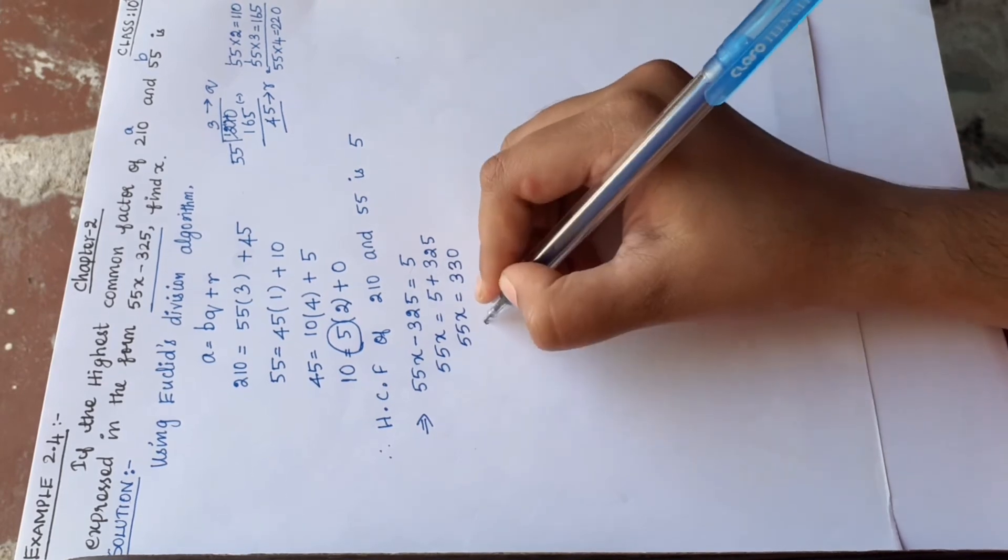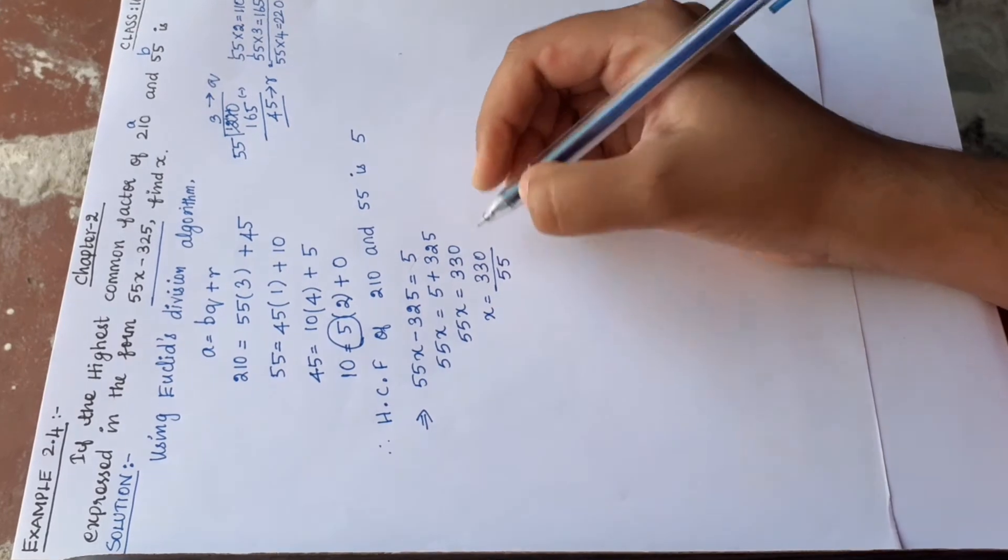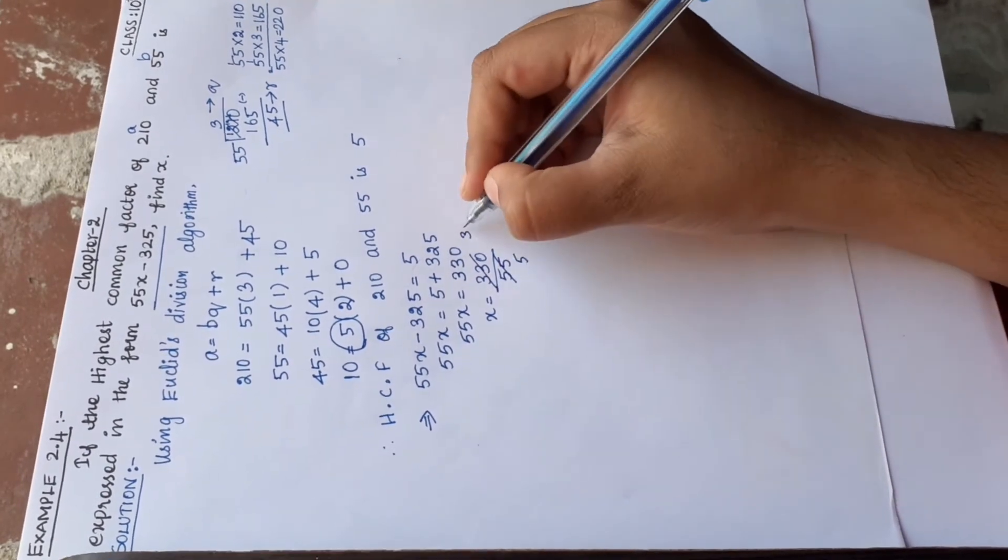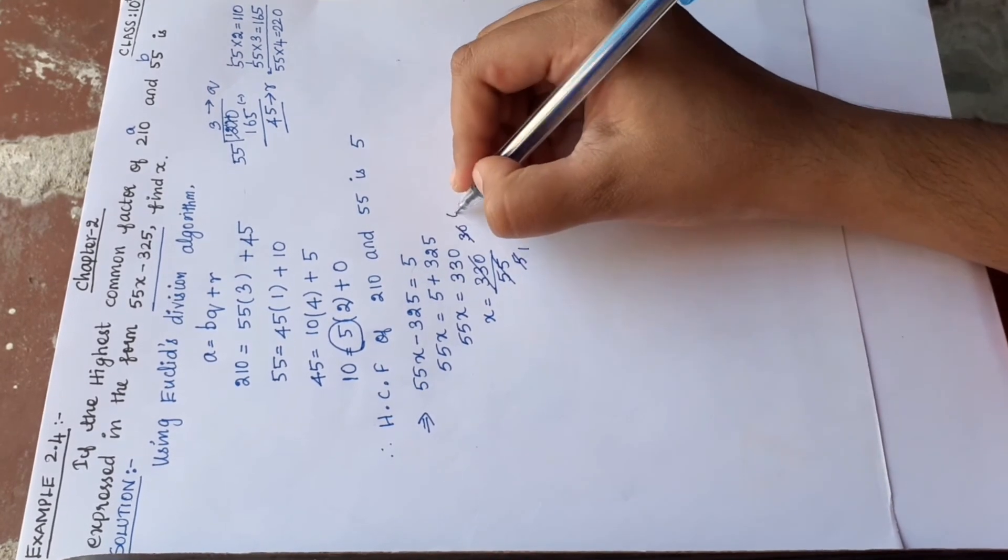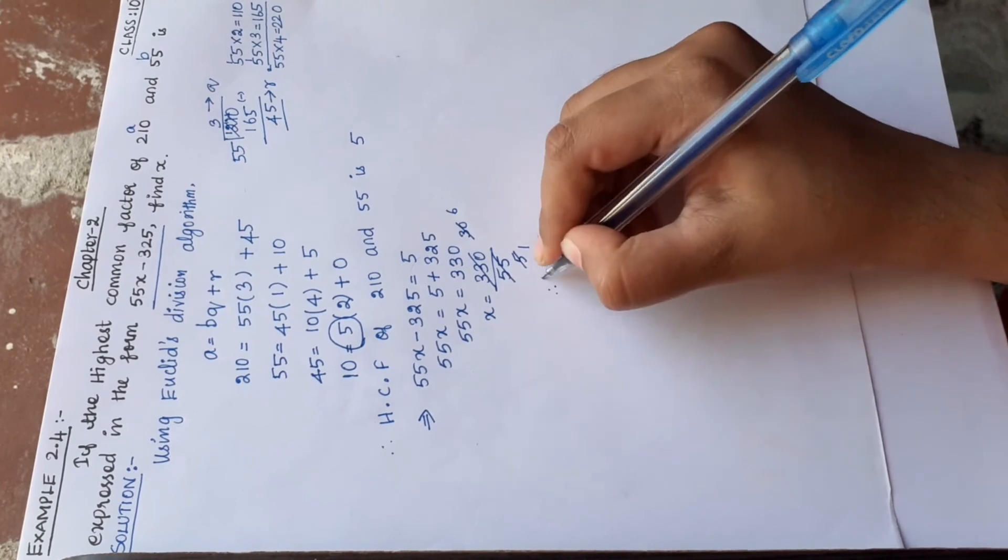55x equals 330. So x equals 330 divided by 55, which equals 6. Therefore, the value of x is equal to 6.